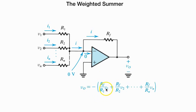Then V0 is equal to minus RF by R1 V1 plus RF by R2 V2 up to RF by Rn Vn. This will give the weighted sum of the voltage.